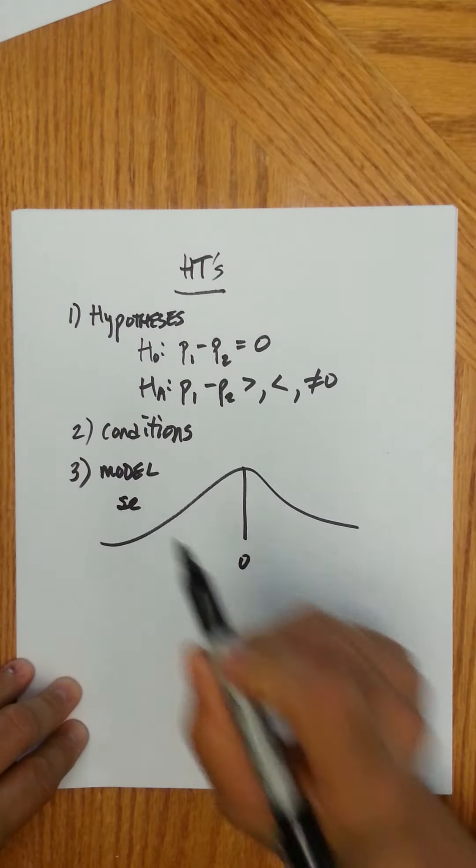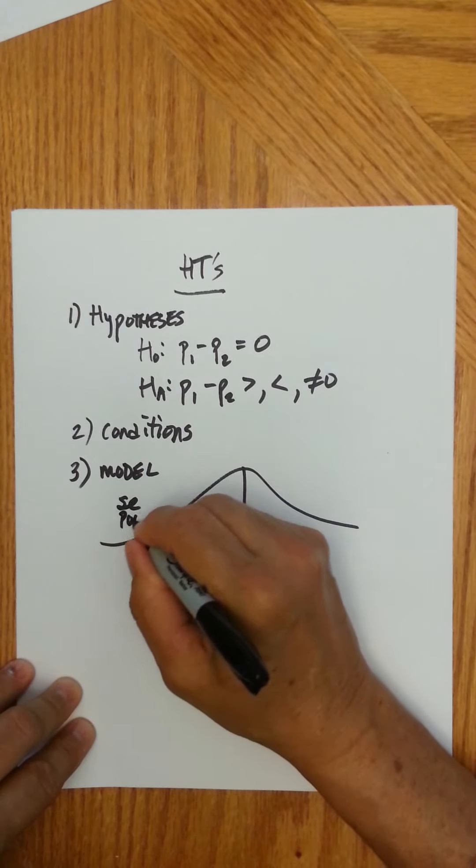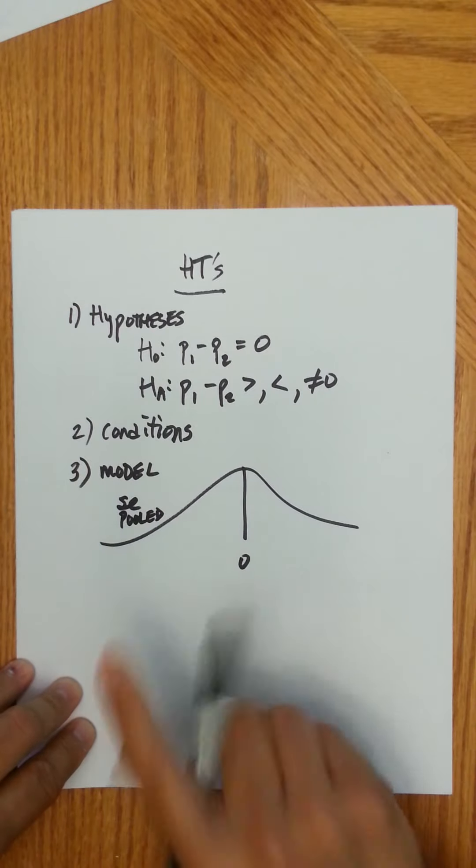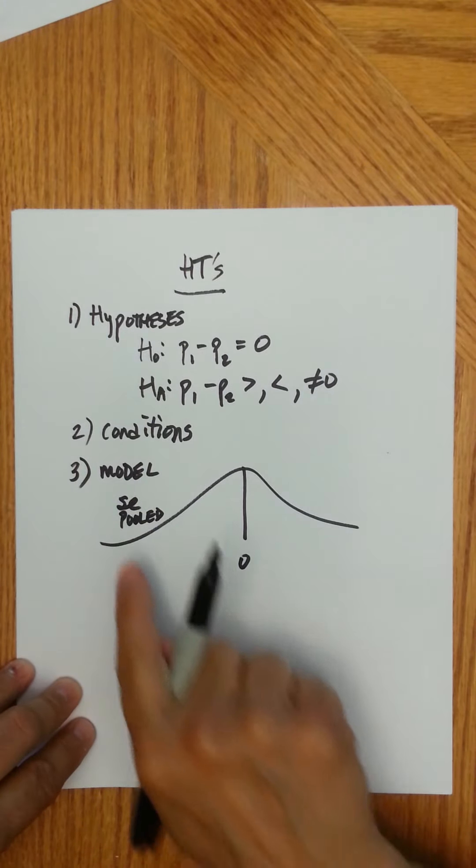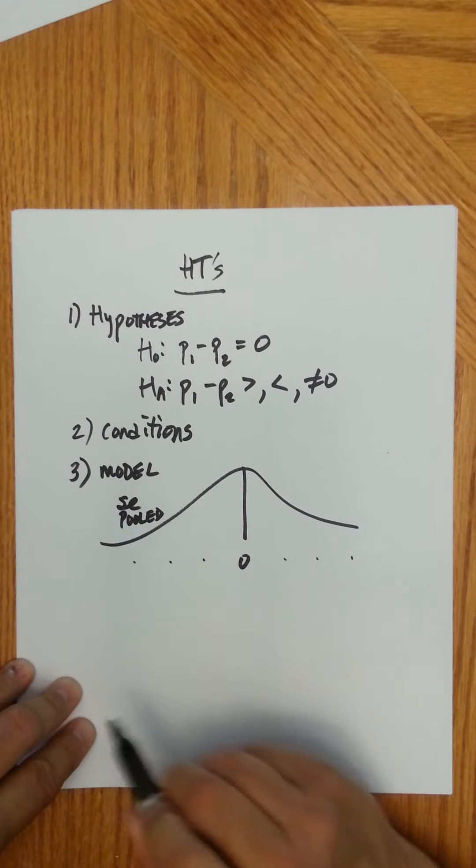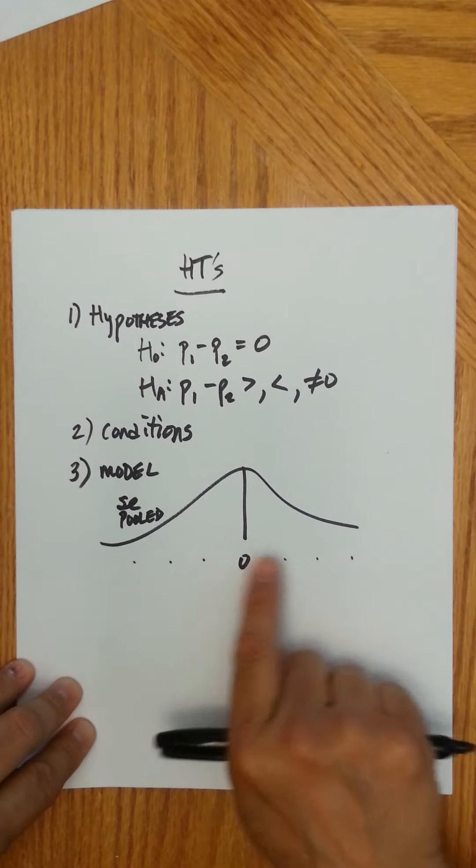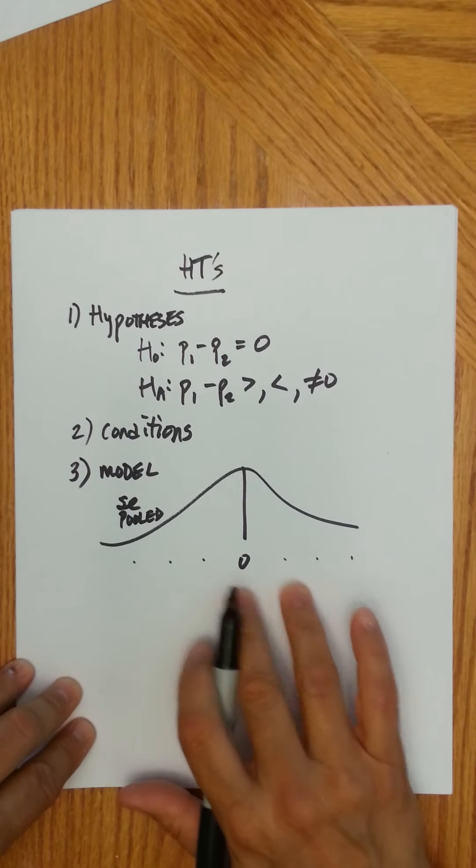And then you use the standard error, the pooled, this is pooled. So again, look at that standard error video, it's the standard error that's pooled. And you basically add it three times, subtract it three times, and of course you're going to have positive numbers here and negative numbers here, but they're going to be the same numbers. But these are positive, these are negative.